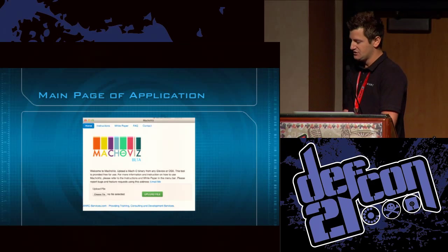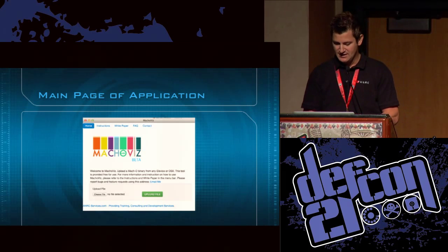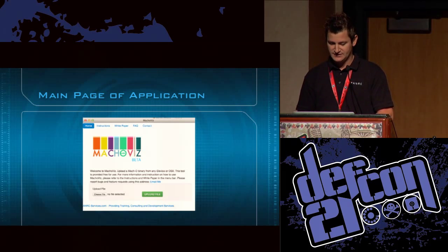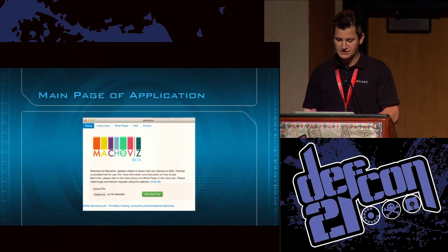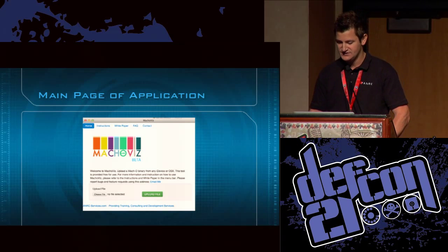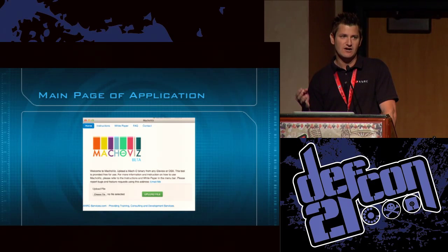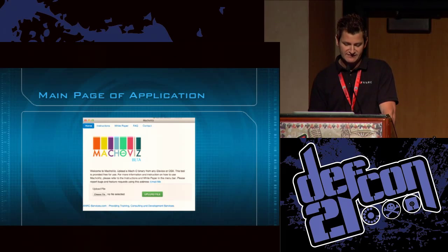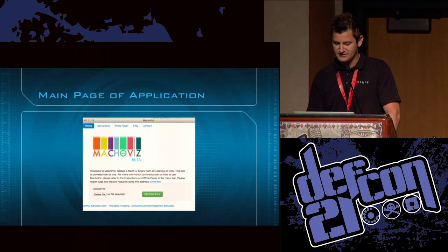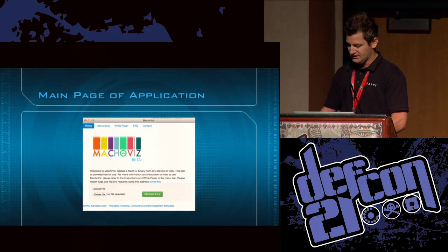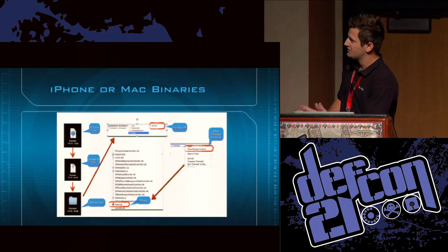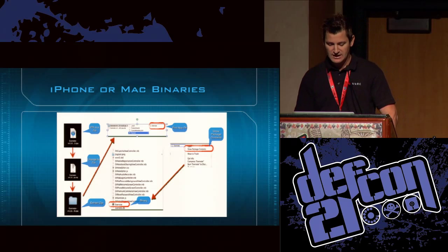This is the main page of the application. At the top you'll see instructions and a white paper — I highly recommend reading it, as there are about three malware samples walked through step by step showing all the features. There's also FAQ and contact information. All you need to do is upload your binary and click 'Upload File' — but before you do, there's something I want to mention.